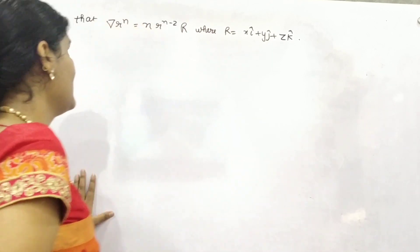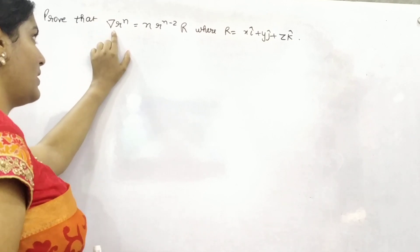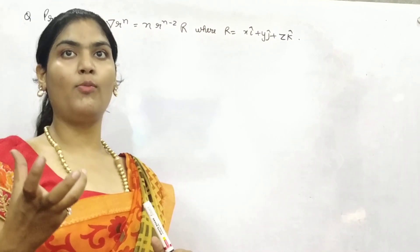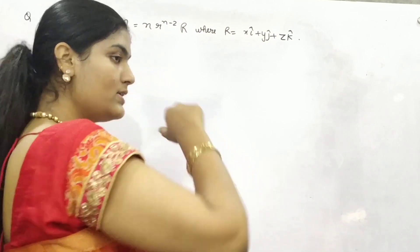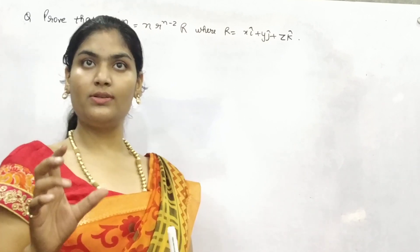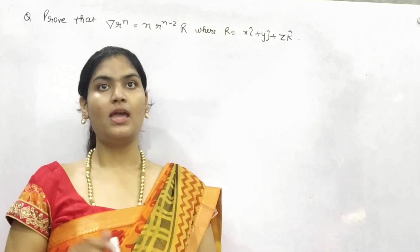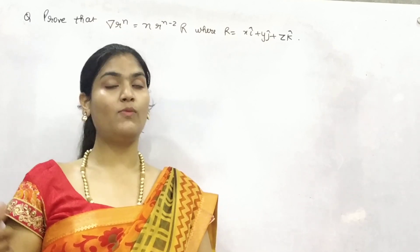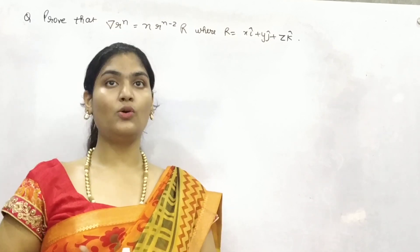Now you can see that you are given with a function in the form of R raised to power N. Now let me tell you what's the form of R here. So R is nothing but the radius of sphere. In 3 dimension, you know that in 2 dimension, equation of a circle is x square plus y square is equal to R square. Why is it so? Because center is at origin.